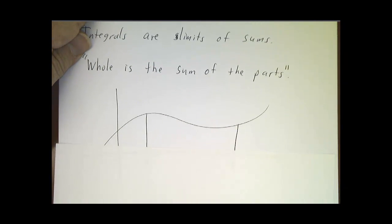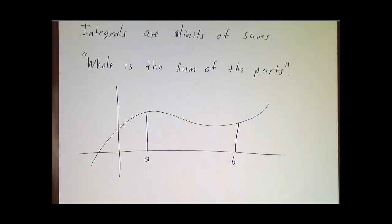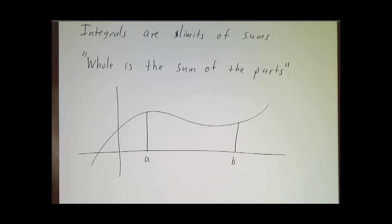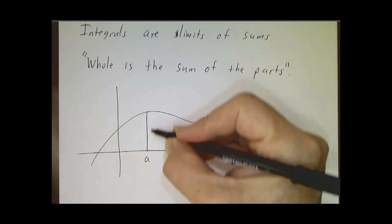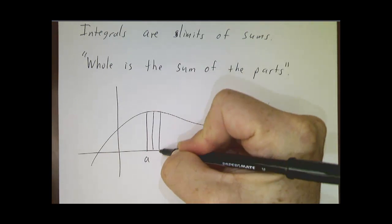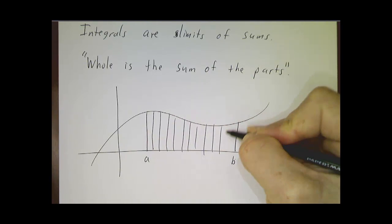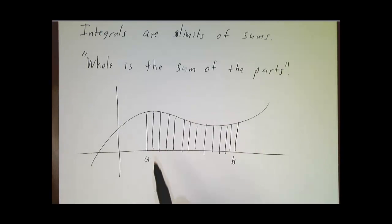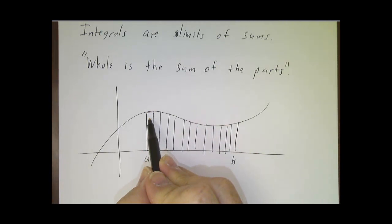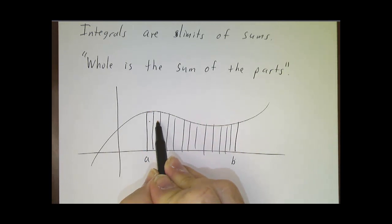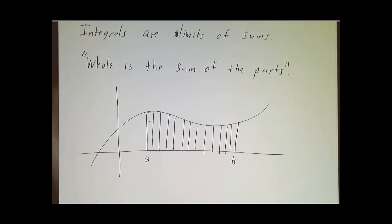The idea of an integral is that the whole is the sum of the parts. If you've got some kind of bulk quantity, like the area under a curve between a and b, the notion of an integral is that you can take that thing, chop it up into little pieces, come up with a rough estimate for what's the contribution of each little piece, and add them together to get a pretty good estimate for the whole thing.